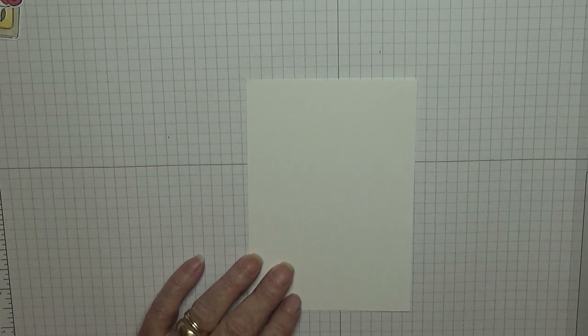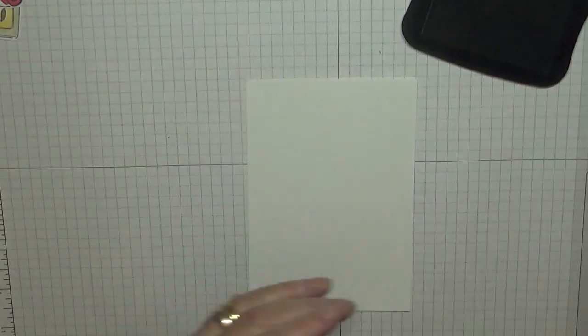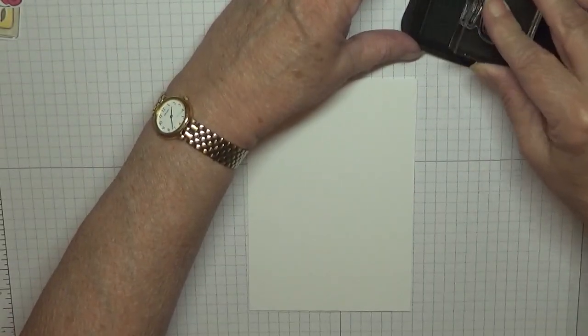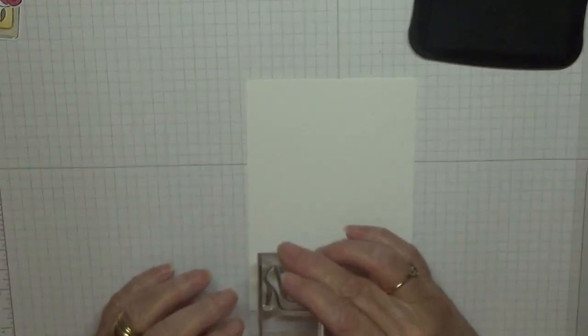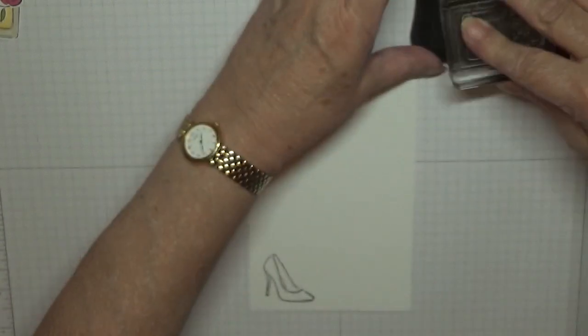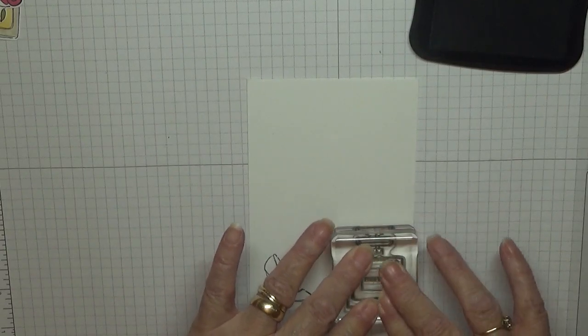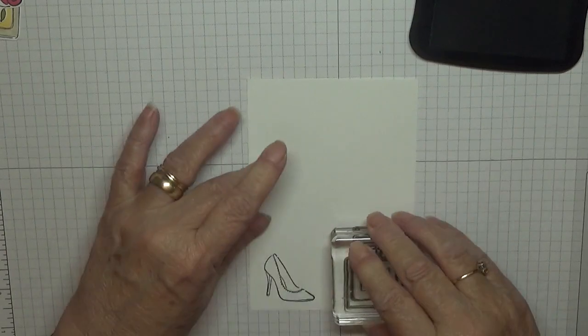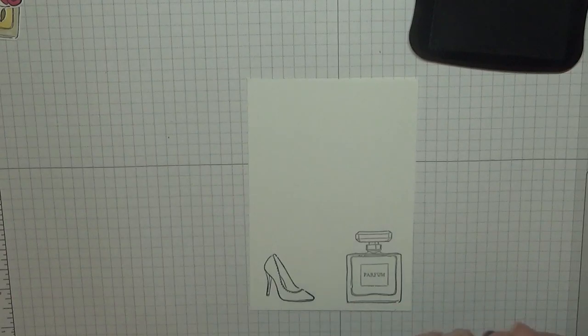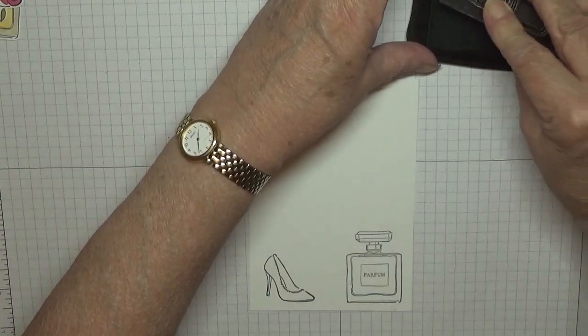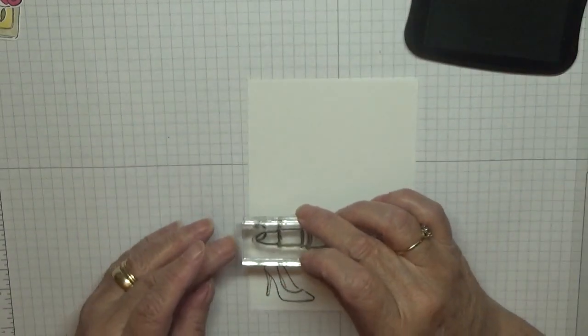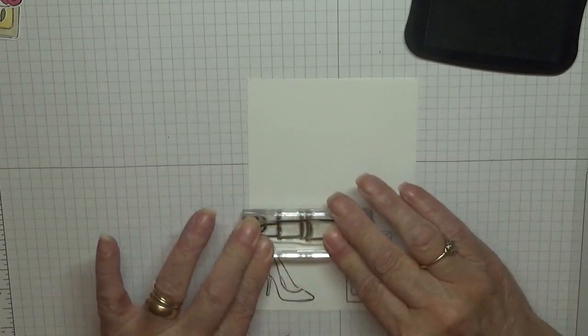Right next we're going to stamp and color our bits and pieces we need. So we need a shoe, I'll put my card where I can see it, one shoe, bottle of perfume.